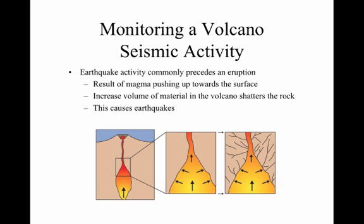As much as we have these systems in place, it's still not an exact science. Still to this day, volcanoes can erupt without warning, and that's why it becomes really dangerous for people to be near or around a volcano. Earthquake activity usually happens before an eruption — this is the result of magma pushing upwards and an increase in the volume of material in the volcano, which usually causes an earthquake to occur.